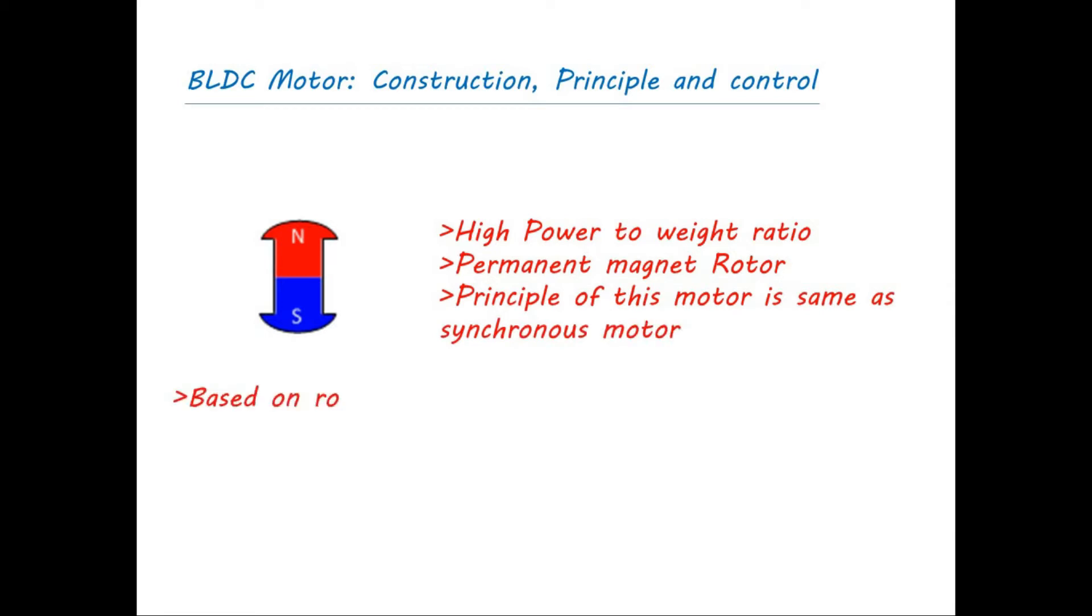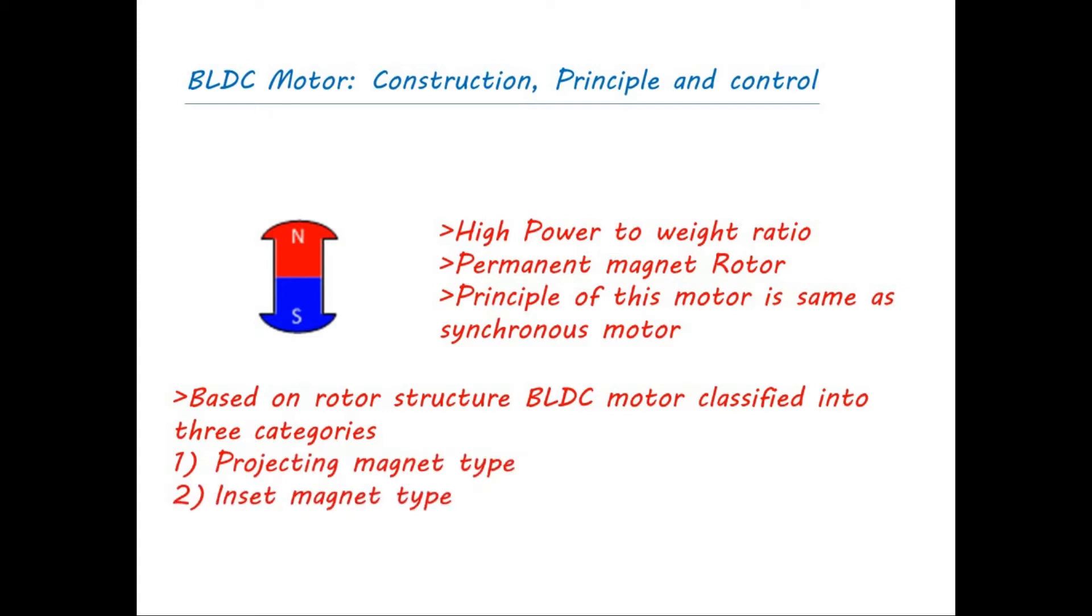Based on the rotor structure, the BLDC motor is classified into three categories: first, projecting magnet type; second, inset magnet type; and third, interior magnet type.